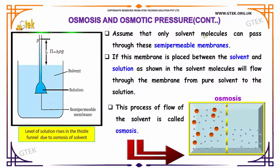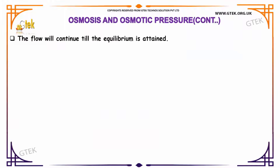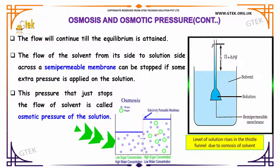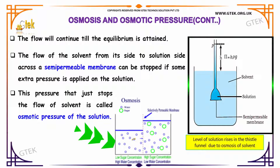Assume that only solvent molecules can pass through this semi-permeable membrane. If this membrane is placed between the solvent and solution, solvent molecules will flow through the membrane. This process of flow of the solvent is called osmosis. The flow will continue till equilibrium is attained. The flow of the solvent from its side to the solution side across a semi-permeable membrane can be stopped if some extra pressure is applied on the solution. This pressure that just stops the flow of the solvent is called the osmotic pressure of the solution.